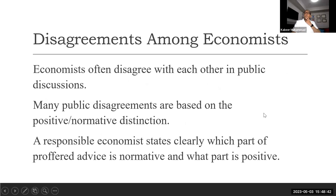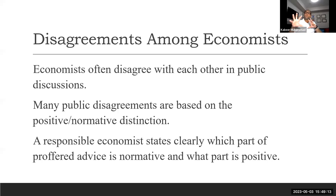But the point is this: if theories, data, and economics-related things are so clear, then why is there disagreement? Whenever you read any research paper, you will find many economists are in favor of it, and many economists are contradicting it. The only issue is about normative statements. Positive statements are already proved, so there is no disagreement. Disagreement only lies with normative statements. Often economists disagree with each other in public discussion, and many public disagreements are based on normative distinctions, not positive statements.